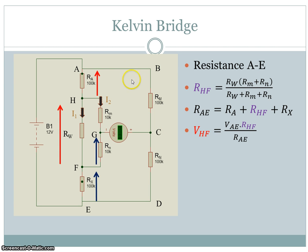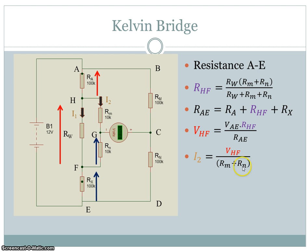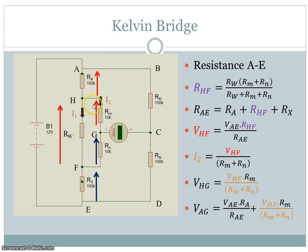If I divide the total voltage by the total resistance, I get the current through the circuit. Multiplying that by RHF gives the voltage between H and F. To calculate the current I2, I divide the voltage between H and F by the resistance in that branch, which is Rm plus Rn. Having got that current, I can work out the voltage between H and G, which is I2 times Rm. Adding that to the voltage across RA gives the voltage from A to G.